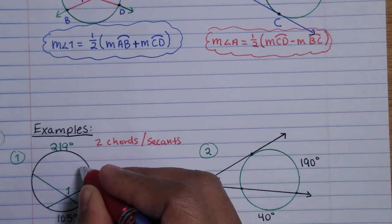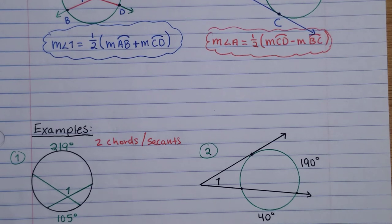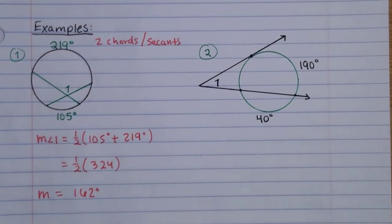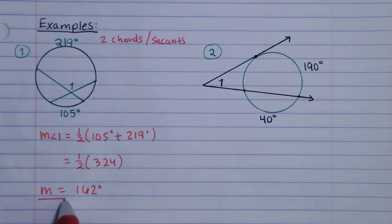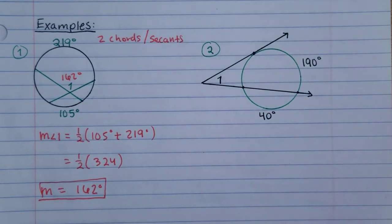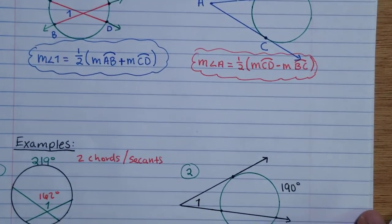The two intercepted arcs are 105 degrees and 219 degrees. Adding them: 105 + 219 = 324. Then half of 324 is 162 degrees. So the measure of Angle 1 is 162 degrees. The formula says add the two arcs and take half the sum — it's simple enough to apply once you understand what type of intersection you have.